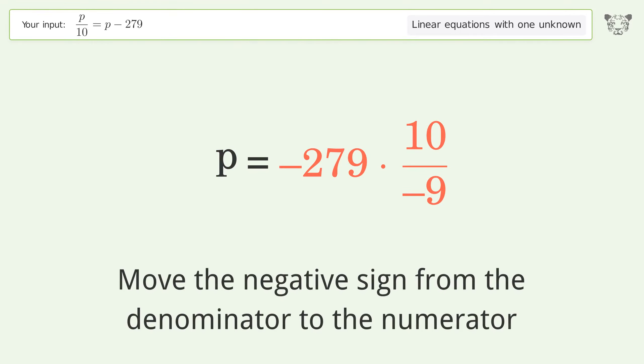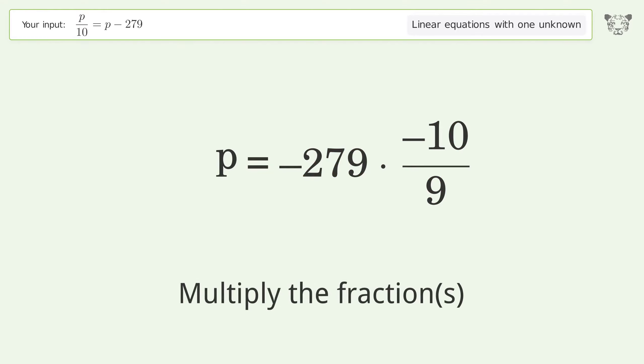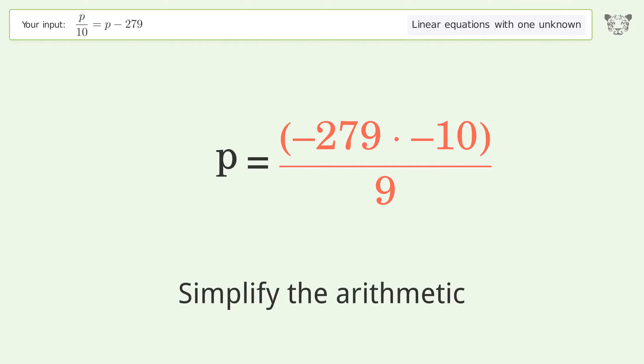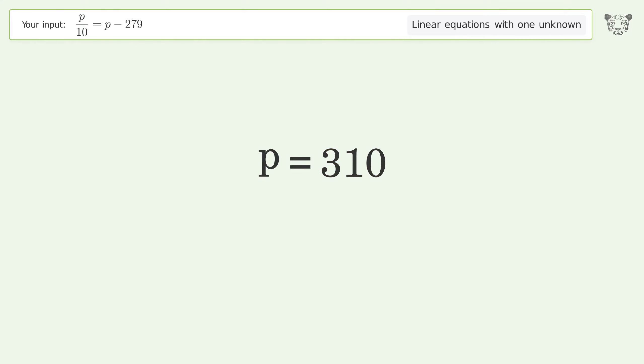Move the negative sign from the denominator to the numerator. Multiply the fractions. Simplify the arithmetic. And so the final result is p equals 310.